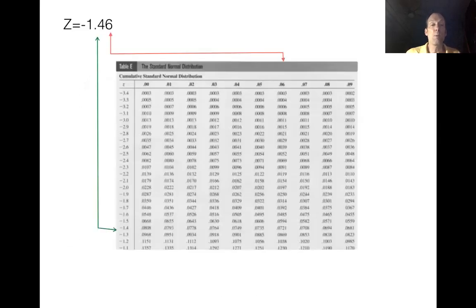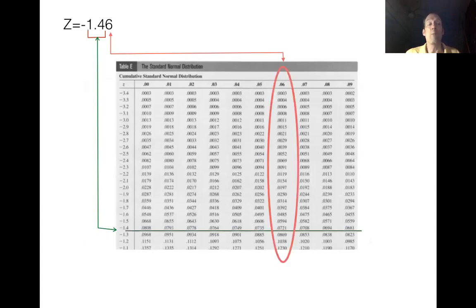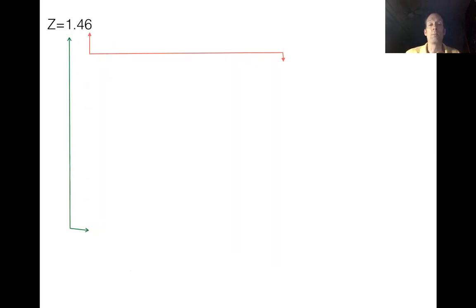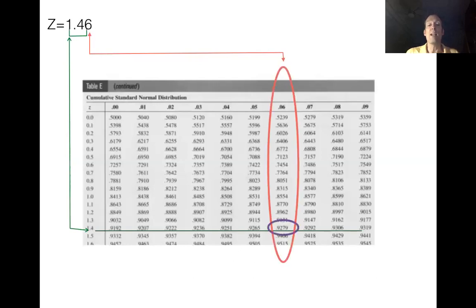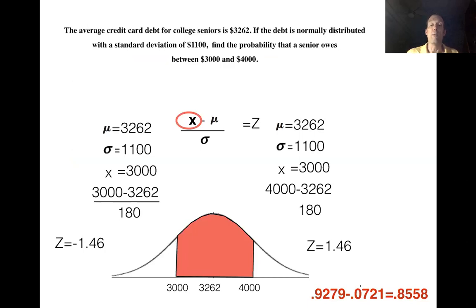Looking up negative 1.46 in the negative z chart gives an area of 0.0721. Looking up positive 1.46 in the positive z chart gives 0.9279. To finish, we subtract: 0.9279 − 0.0721 = 0.8558, or 85.58%. So the probability that average credit card debt for college seniors falls between $3,000 and $4,000 is approximately 86%.